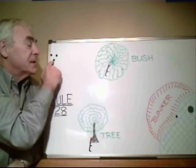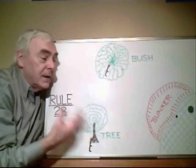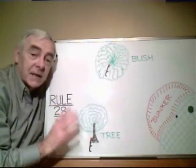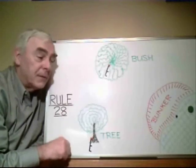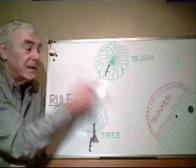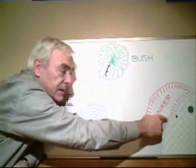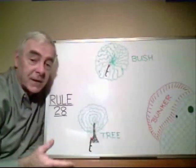The third case is where the player plays his ball and it sticks in the lip of a bunker. He gets up to the bunker and he decides, I can't play it from there, I'll keep it all unplayable. Now he still has the three options. He can go back to here and play again, or he can drop a ball within two club lengths, not nearer the hole, but it must be in the bunker.